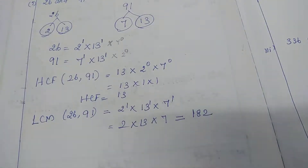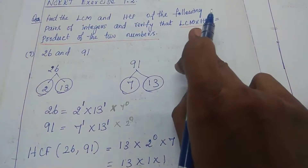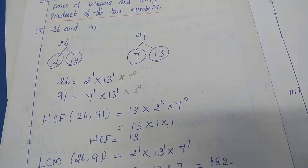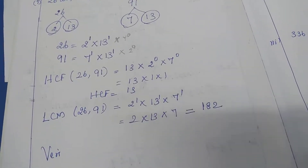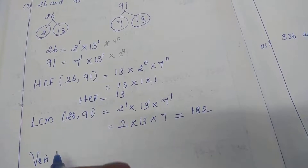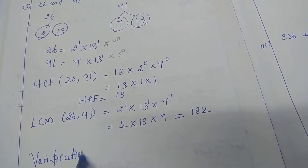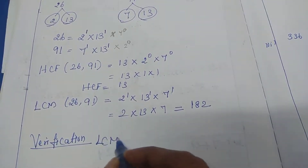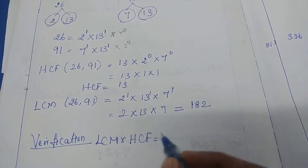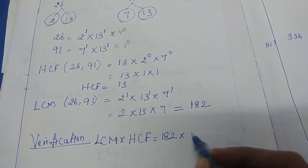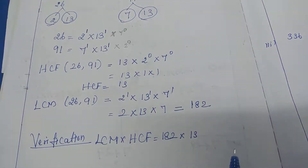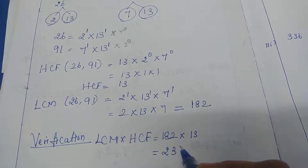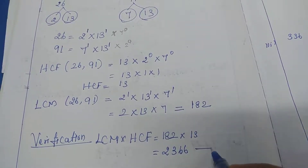After calculating HCF and LCM, we move to the verification: LCM into HCF equals product of two numbers. For the left hand side, LCM into HCF = 182 into 13. Multiplying these two numbers we get 2366. This is equation number one.